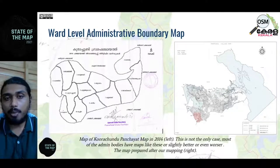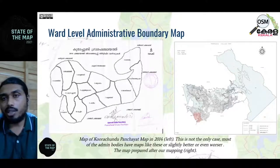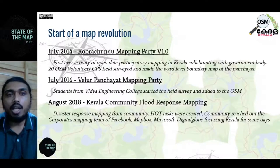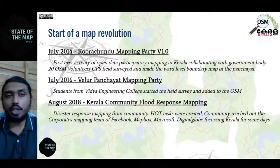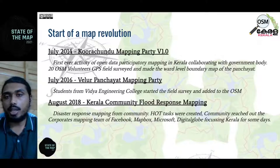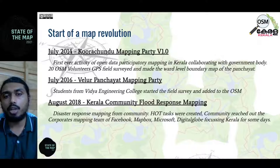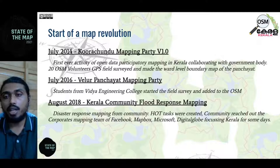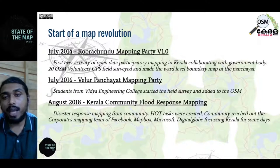You can see how problematic the map was before OSM Kerala intervened. On the left you can see the map of Kurachund village panchayat, and after OSM volunteers intervened, you can see the difference. It all started from Kurachund village panchayat in 2014 - the first ever mapping party organized by a government body. Twenty OSM volunteers mapped the entire village and village boundary. In 2016, Velul Panchayat mapping party replicated the same model. In 2018, a catastrophic flood hit Kerala and disaster response community mapping tasks were created.